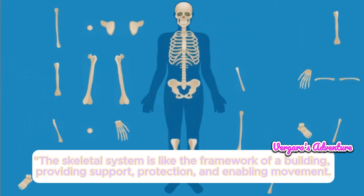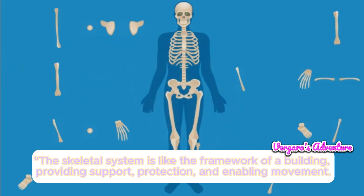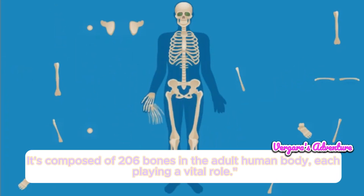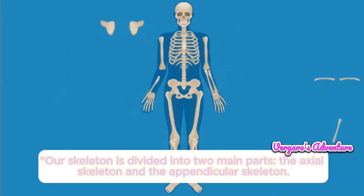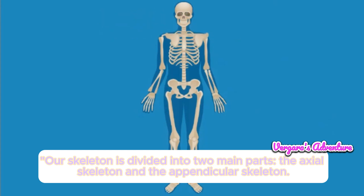The skeletal system is like the framework of a building, providing support, protection, and enabling movement. It's composed of 206 bones in the adult human body, each playing a vital role. Let's talk about the structure of the skeletal system. Our skeleton is divided into two main parts: the axial skeleton and the appendicular skeleton.